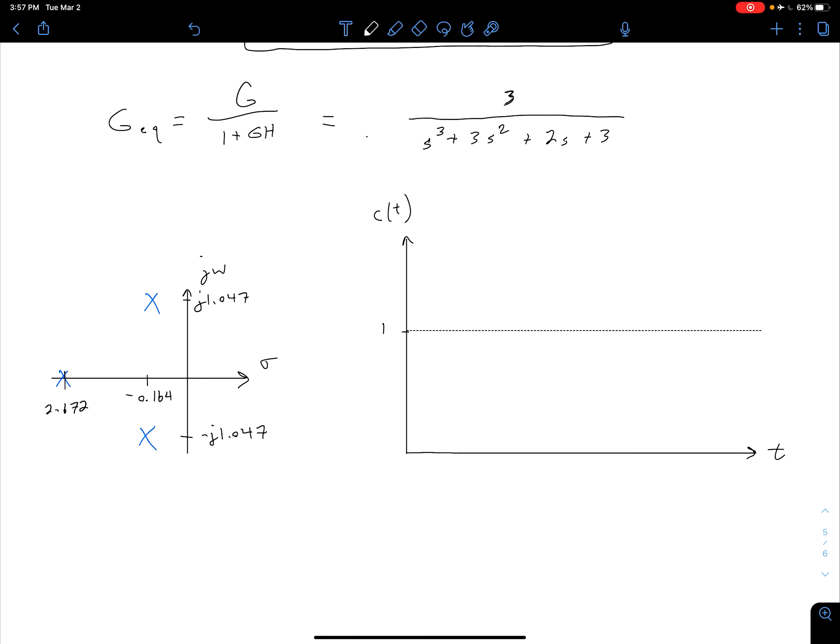So we notice that all three of our poles are in the left half plane. So we know that our system should be stable.